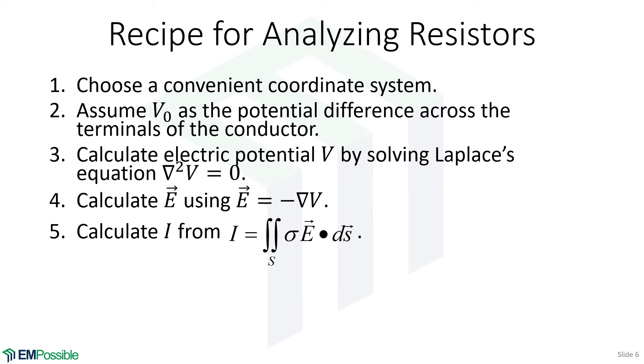Well, if we know the conductivity of the material between the plates, then the conductivity times the electric field gives us the electric current density. So if we integrate that in the cross-section of the resistor, we will get total current due to the applied voltage, V₀.